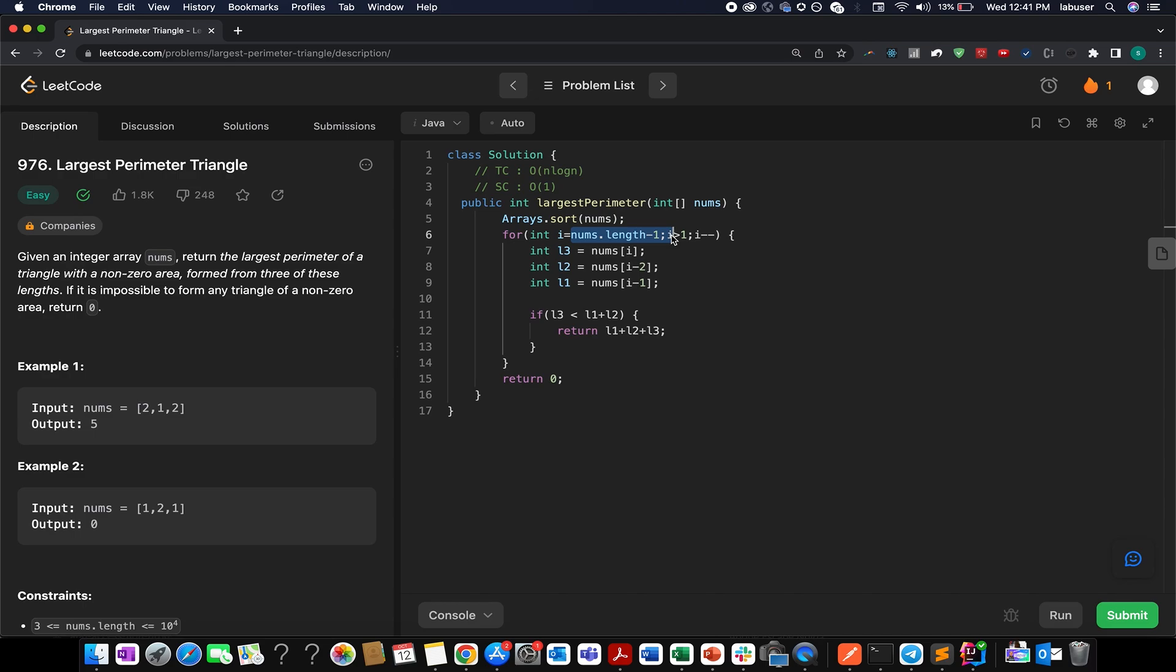In the first code we sort the array up, and we sort it in increasing order. Then we move in the reverse direction starting from the largest element towards the least element. And with each iteration we extract L3, L2, and L1.